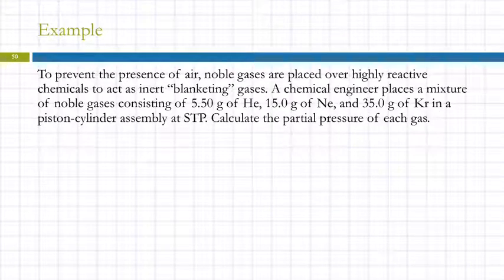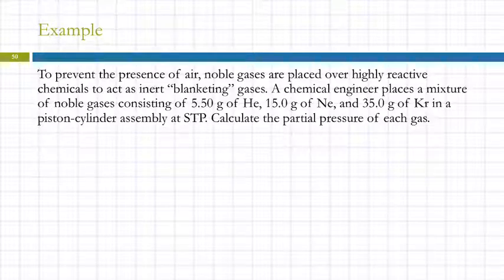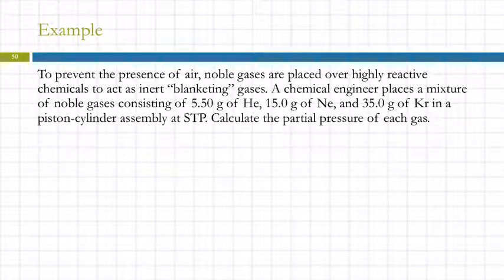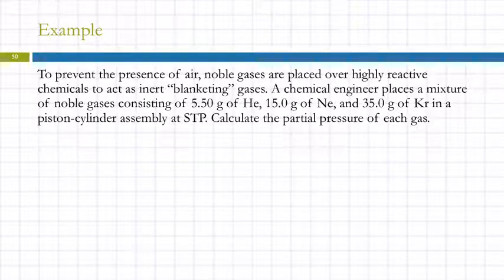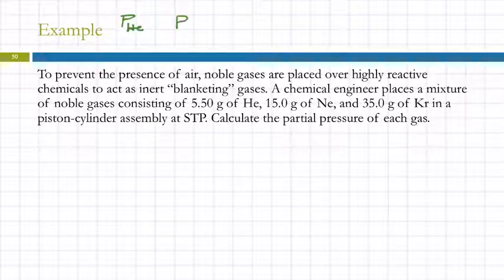Example: To prevent the presence of air, noble gases are placed over highly reactive chemicals as inert blanketing gases. A chemical engineer places a mixture of noble gases — 5.50 grams of helium, 15 grams of neon, and 35 grams of krypton — in a piston-cylinder assembly at STP. Calculate the partial pressure of each gas. We have three gases: helium, neon, and krypton, and we want the partial pressure of each.